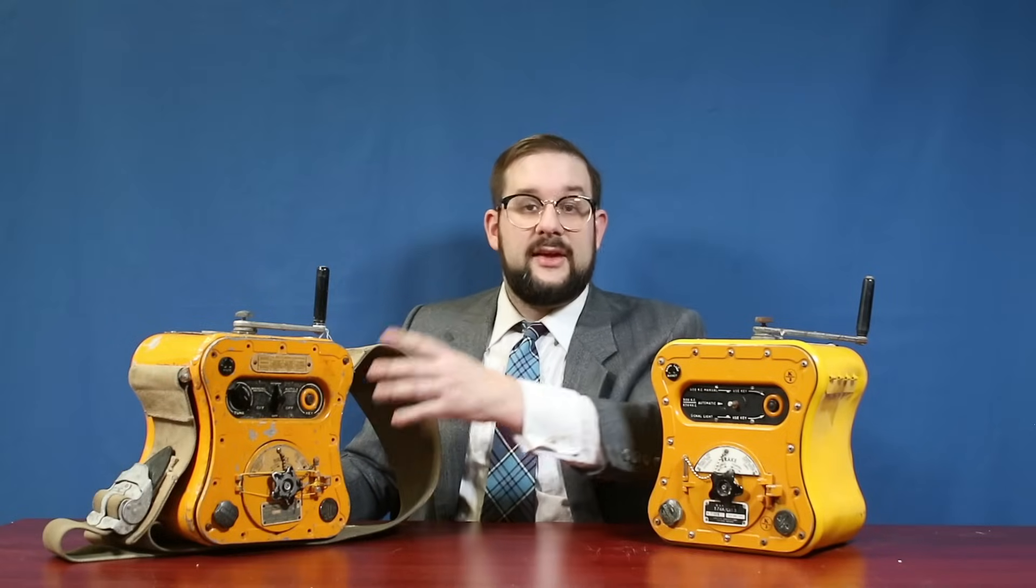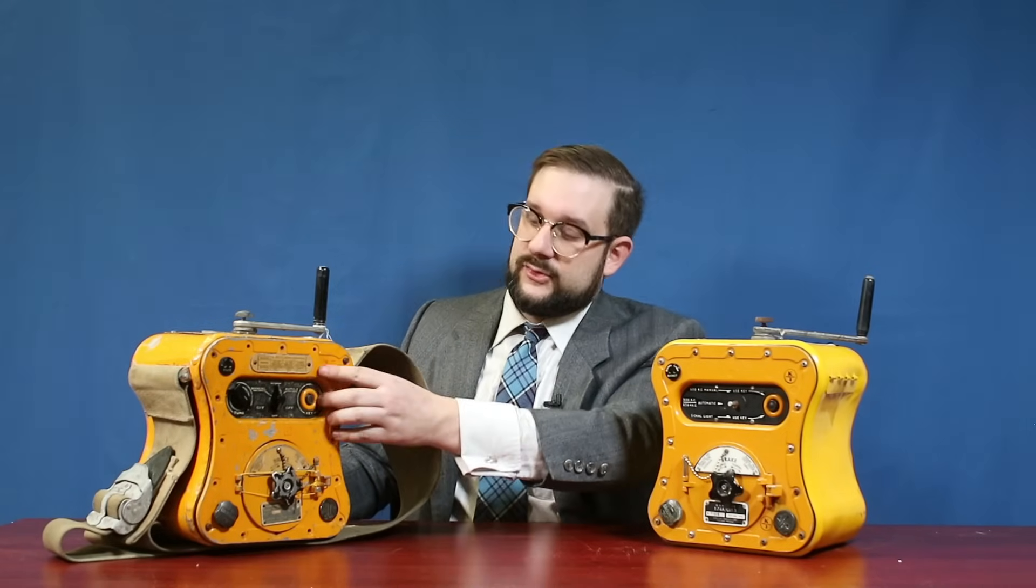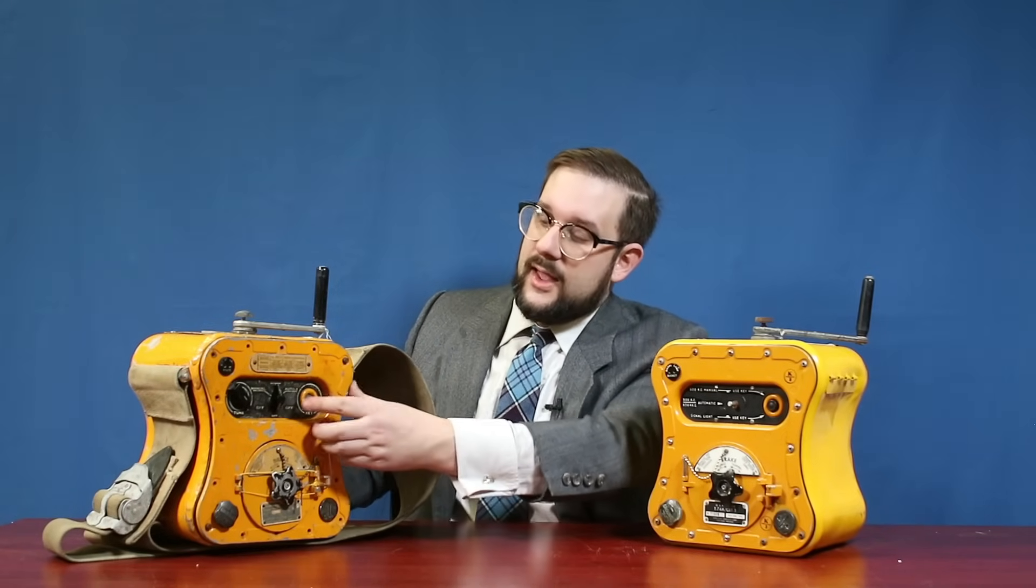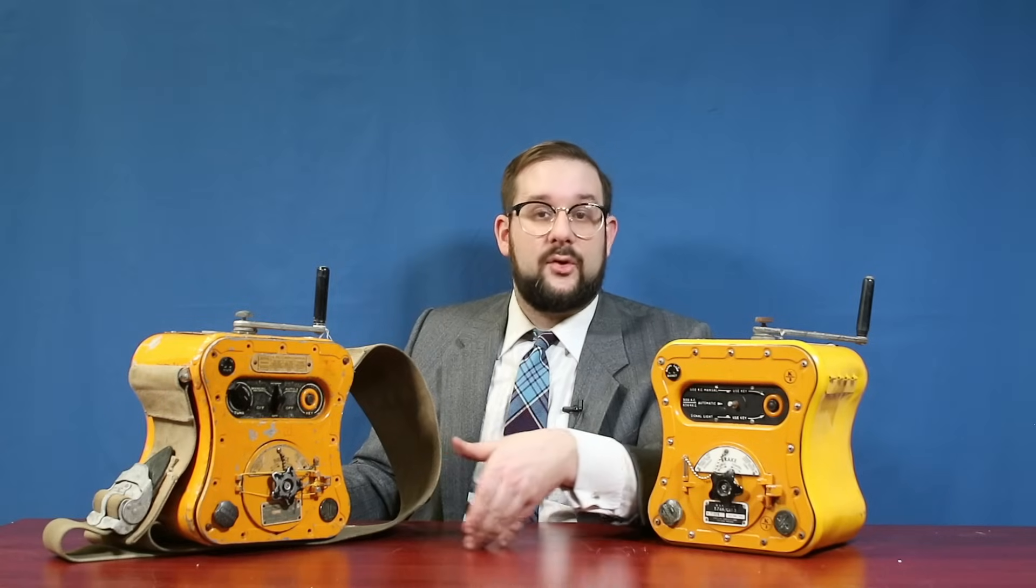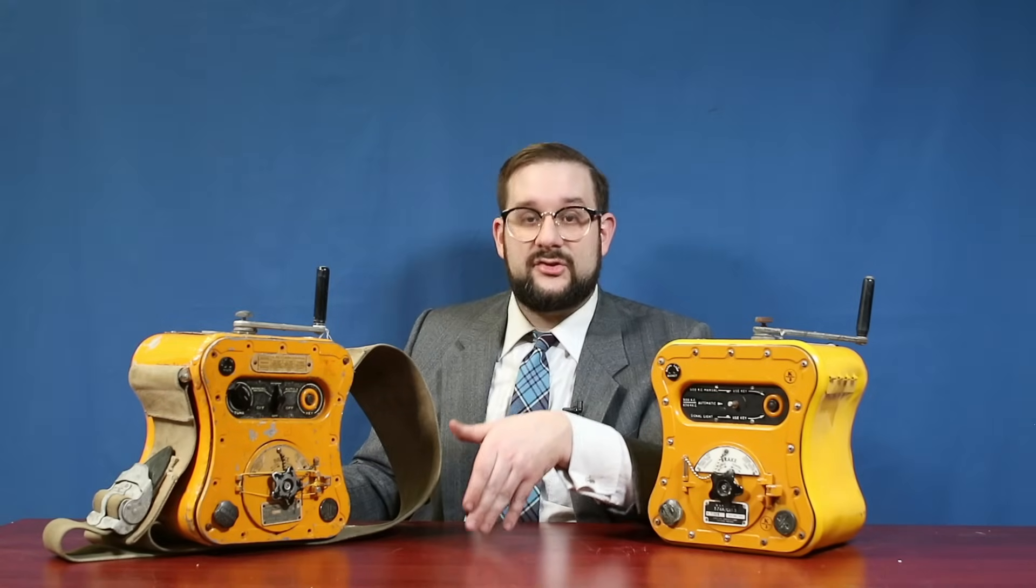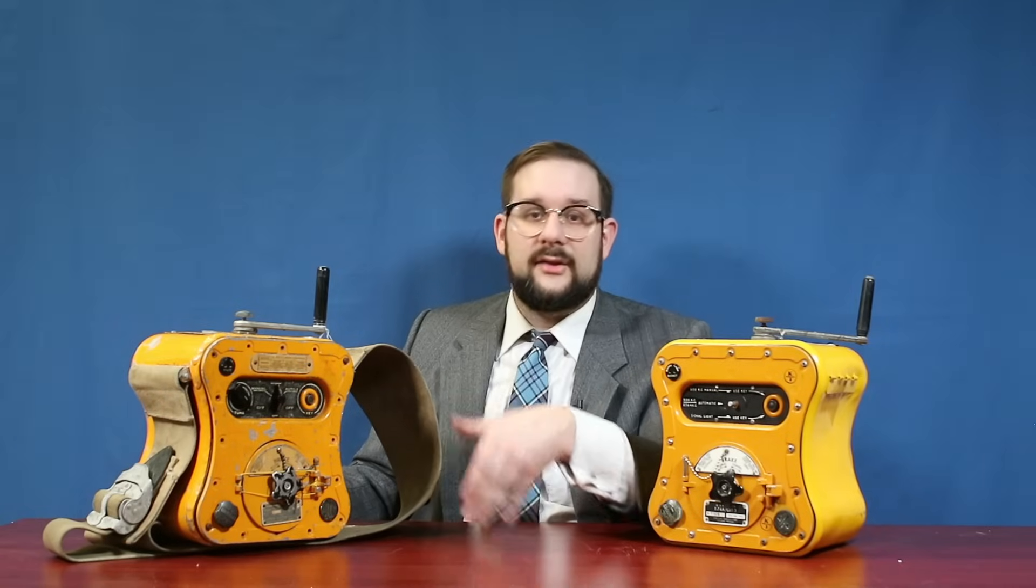You also have a signal mode selector knob with six different positions. Now the first position is manual Morse code signaling using this key on the front. And the next two are automatic signaling modes where the Morse code message is automatically composed by a set of mechanical cams. The Auto 1 setting transmits a string of SOS for 20 seconds followed by a continuous dash for 20 seconds.